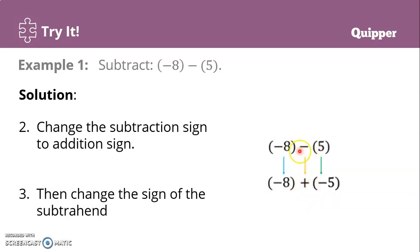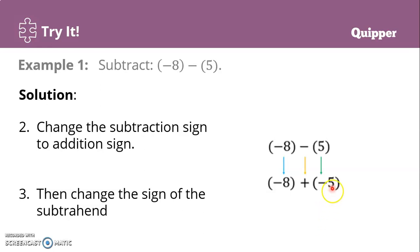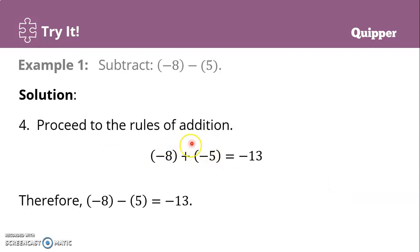Again, the subtraction sign or minus sign, we change it into a positive or addition sign. And then this positive 5, we change the sign of the subtrahend — so positive 5 becomes negative 5. Now it's like an addition of integers. We have the same signs, like signs. From our previous lesson, when the signs are the same, we add the absolute values and copy the common sign. Absolute value of negative 8 is 8, absolute value of negative 5 is 5. So 8 plus 5 is 13, and the common sign is negative, so that's negative 13.